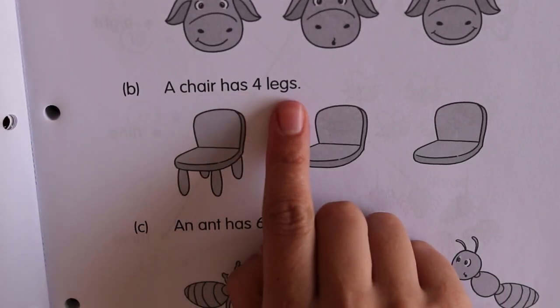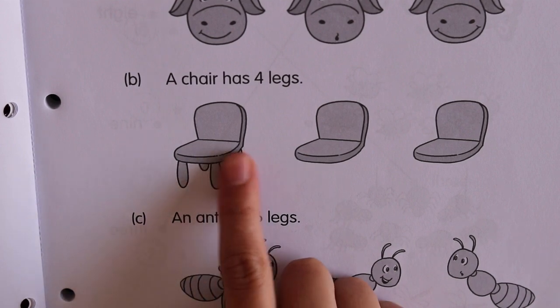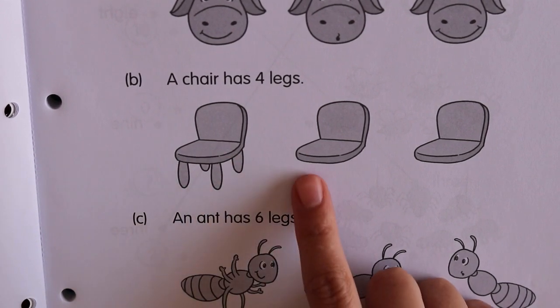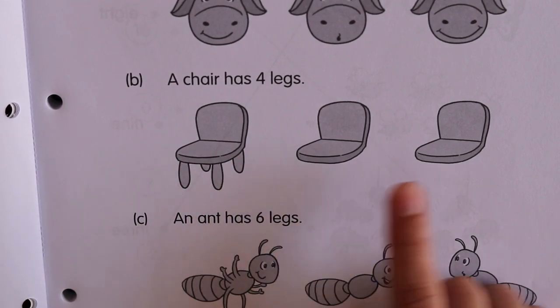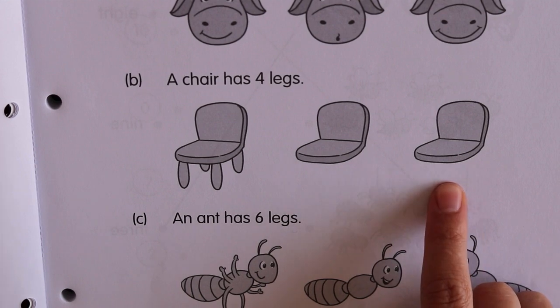A chair has four legs. That chair's already got four legs. You need to draw four legs on this chair and four legs on this chair.